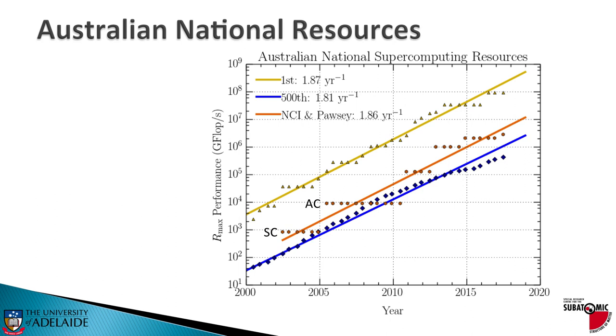It fell out of the top 500. And in fact, in early 2010, 2011, this was a very dark time for supercomputing in Australia. You were trying to serve the nation's need with a supercomputer that wasn't even in the top 500.